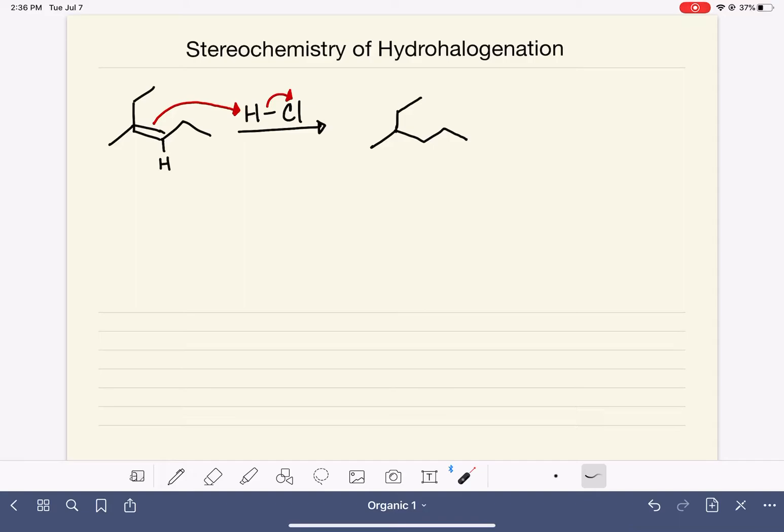In Markovnikov's rule, we want to look at how many hydrogens are on each carbon of the double bond. This carbon has zero hydrogens on it, it just has two bonds to carbon. This carbon has one hydrogen. Markovnikov's rule tells us that the new hydrogen wants to go onto the carbon that already has the most hydrogen present. So that means that our new hydrogen wants to go right here, leaving our other carbon with a positive charge.